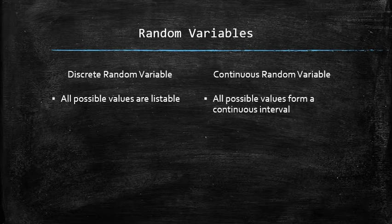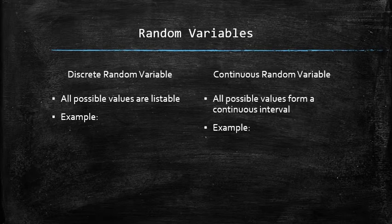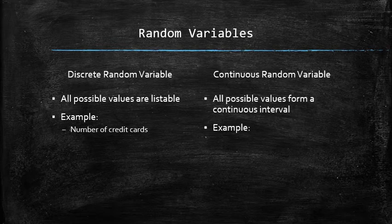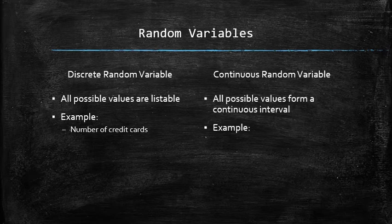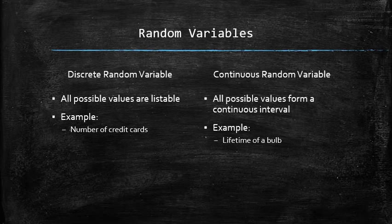Now we can classify the random variables as discrete or continuous. Do you think the number of credit cards of a randomly selected person is discrete or continuous? The correct answer is discrete, because the possible values are 0, 1, 2, 3, and so on. Do you think the lifetime of a randomly selected bulb is discrete or continuous? The correct answer is continuous, because it can be any number greater than 0.